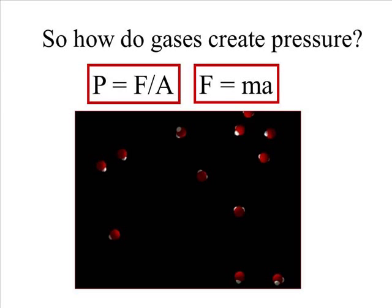So how do gases create pressure? Well, if pressure is force divided by area, and force is mass times acceleration, and the mass of the particle times its acceleration, divided by the surface area on which those particles are acting.